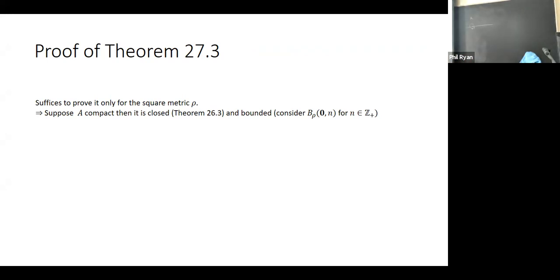We don't have to prove it for both metrics because we know the topologies are homeomorphic — we can squeeze the Euclidean distance between multiples of the square metric. So let's just prove it for the square metric. If the space is compact, it's closed (already proved in Theorem 26.3), and it's bounded by this trick: take any element of A and look at balls of radius n — that's an open cover, so there has to be a finite sub-cover, and the largest n gives a bound.